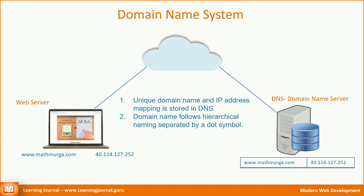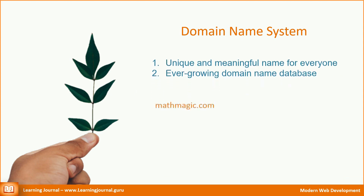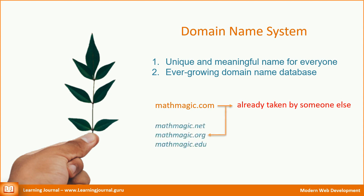You might be wondering how this system helped to solve the two problems we talked about earlier. The first problem has a simple solution. MathMagic.com is already registered, and I can't do anything about it. However, I still have a bunch of other extensions or TLDs — I can try MathMagic.net, MathMagic.org, MathMagic.edu, and so on. If I am looking to register with specific relevance to a country, I can use a country code based TLD. For example, MathMagic.in makes more sense for the Indian audience, and MathMagic.us for the US market.